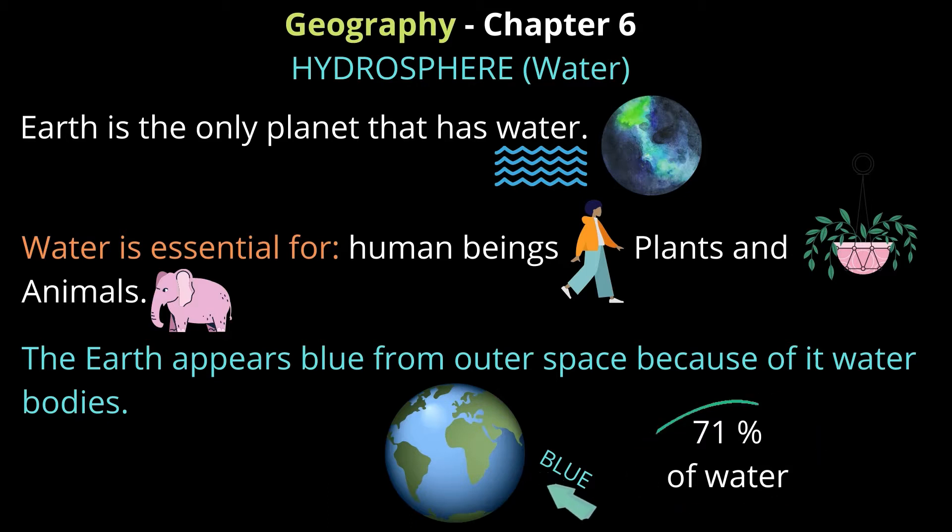From outer space, when you look at Earth, it appears blue. Why? Because of all the water bodies on Earth. They say that 71% of Earth is water. All the blue that you see on Earth is the water.